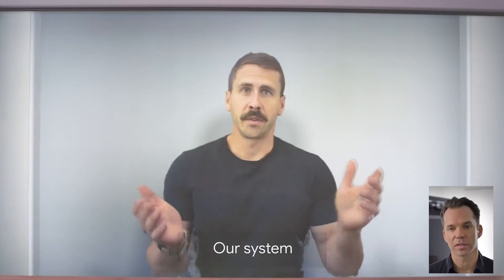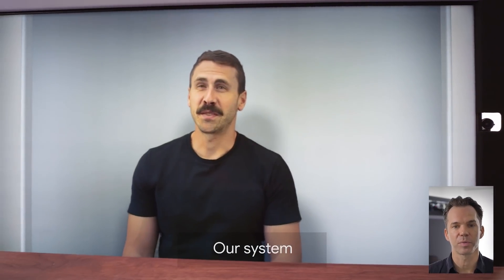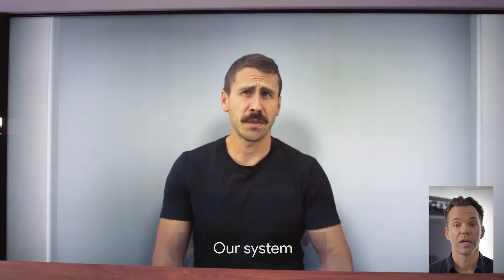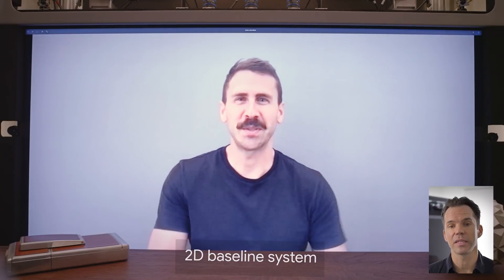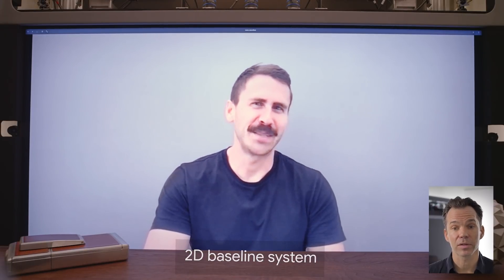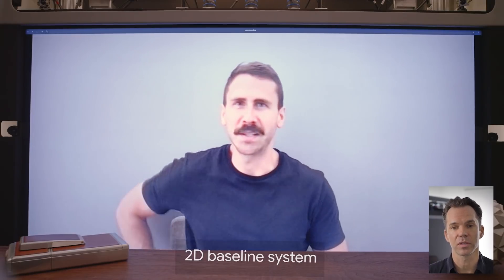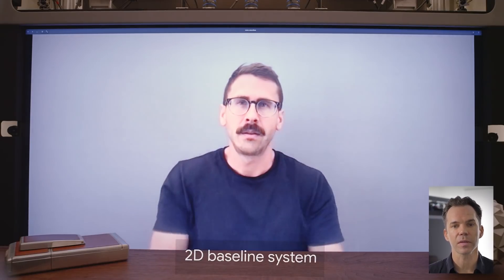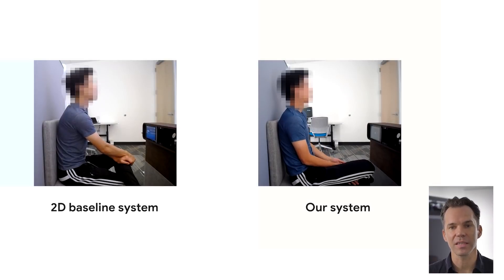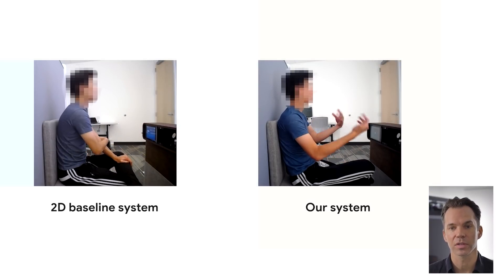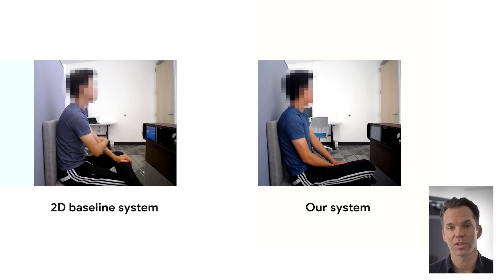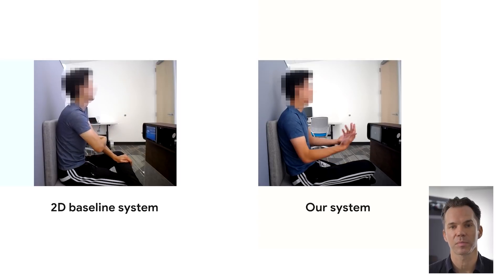We also evaluated our system by measuring the frequency of specific nonverbal behaviors that are known to indicate effective meeting dynamics. We compared our system to a 2D baseline system with comparable image resolution and display size. We observed statistically higher rates of important nonverbal cues like hand gestures, head nods, and eyebrow movements. This finding suggests a greater level of engagement and sense of co-presence between the two participants.